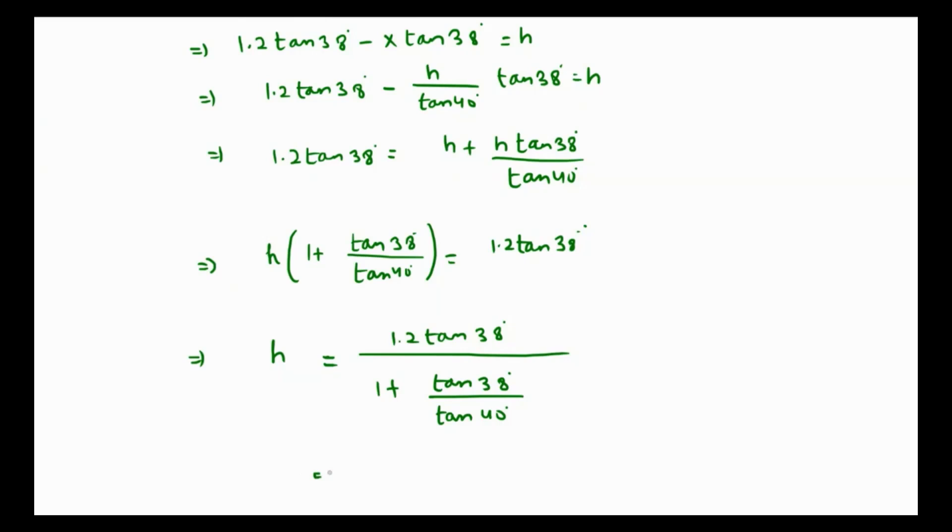That will come out as tan of 38 over tan of 40, 1 plus this value, and 1.2 times tan of 38 over. The answer is coming as 0.49 miles up to two decimal places. That is the height of the balloon from the ground. Thank you.